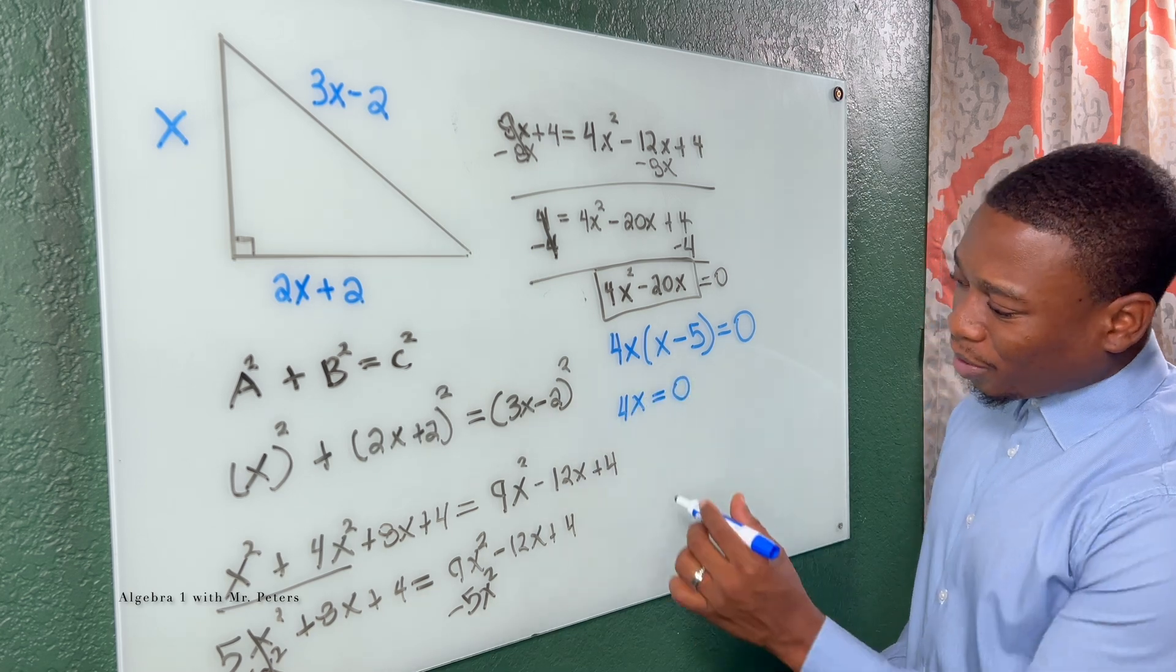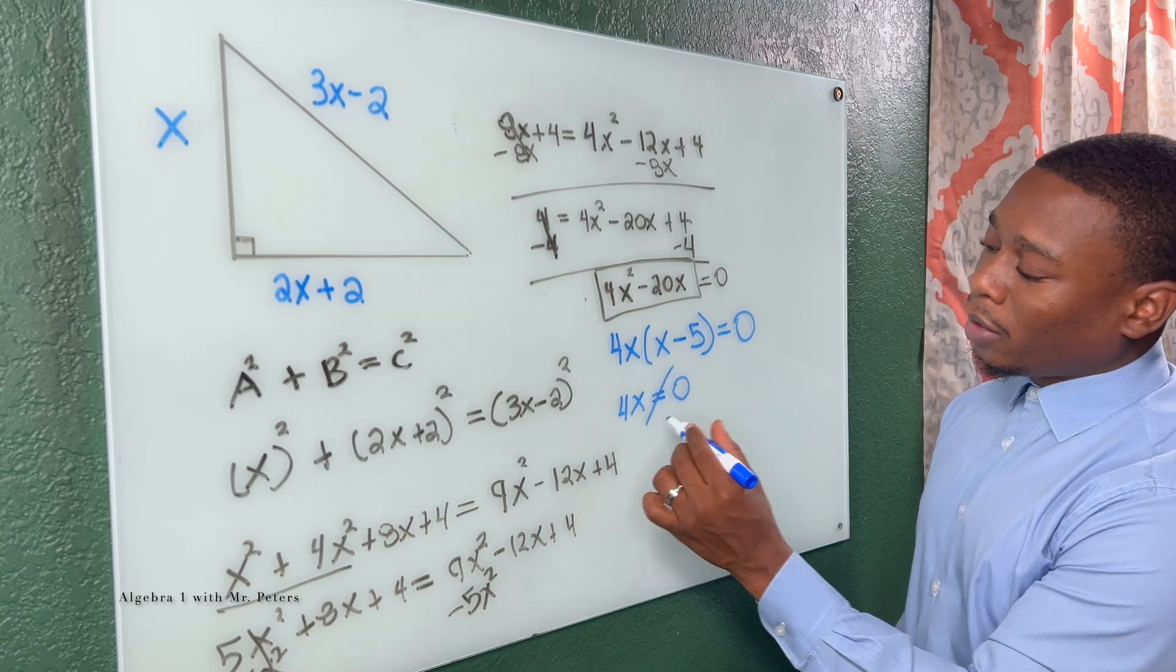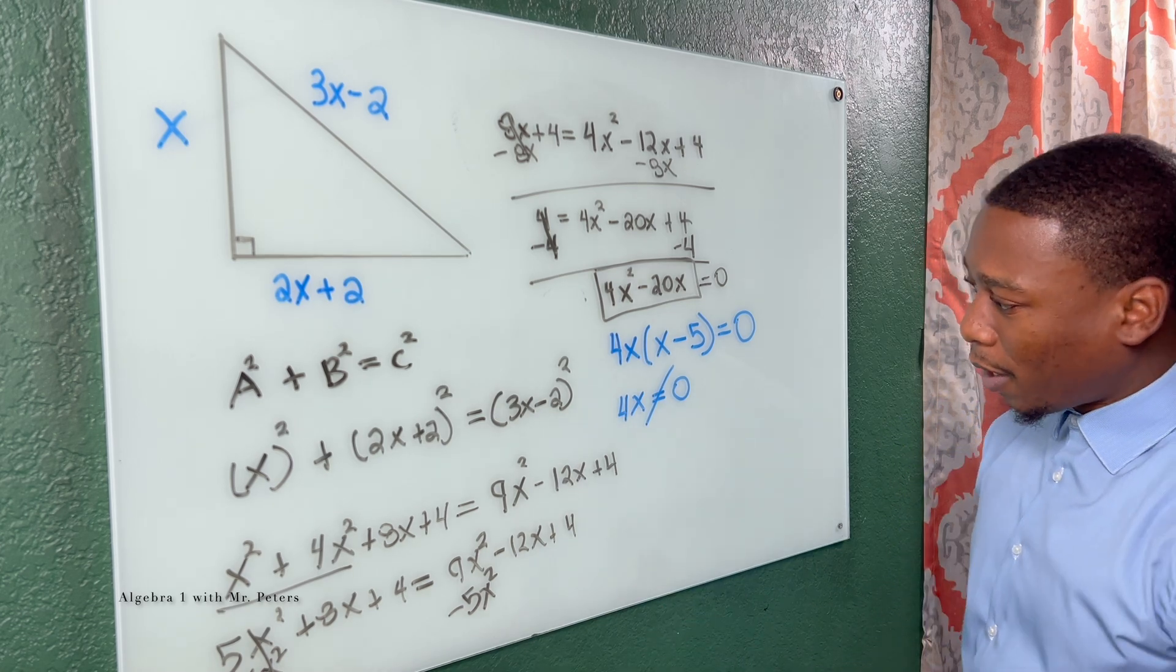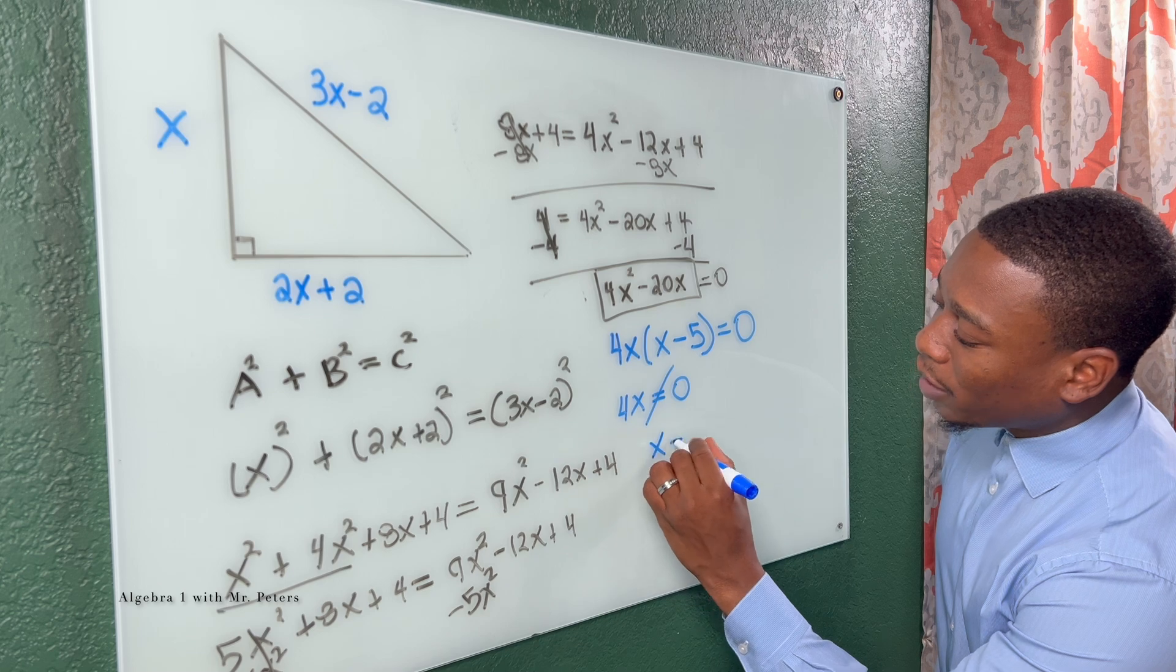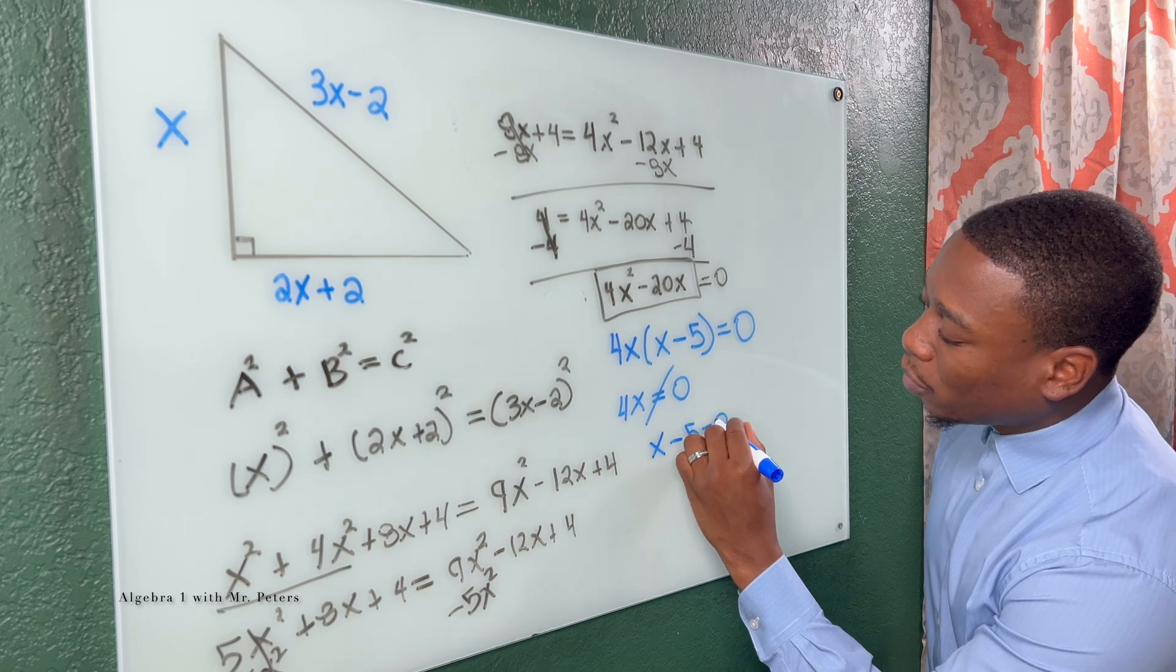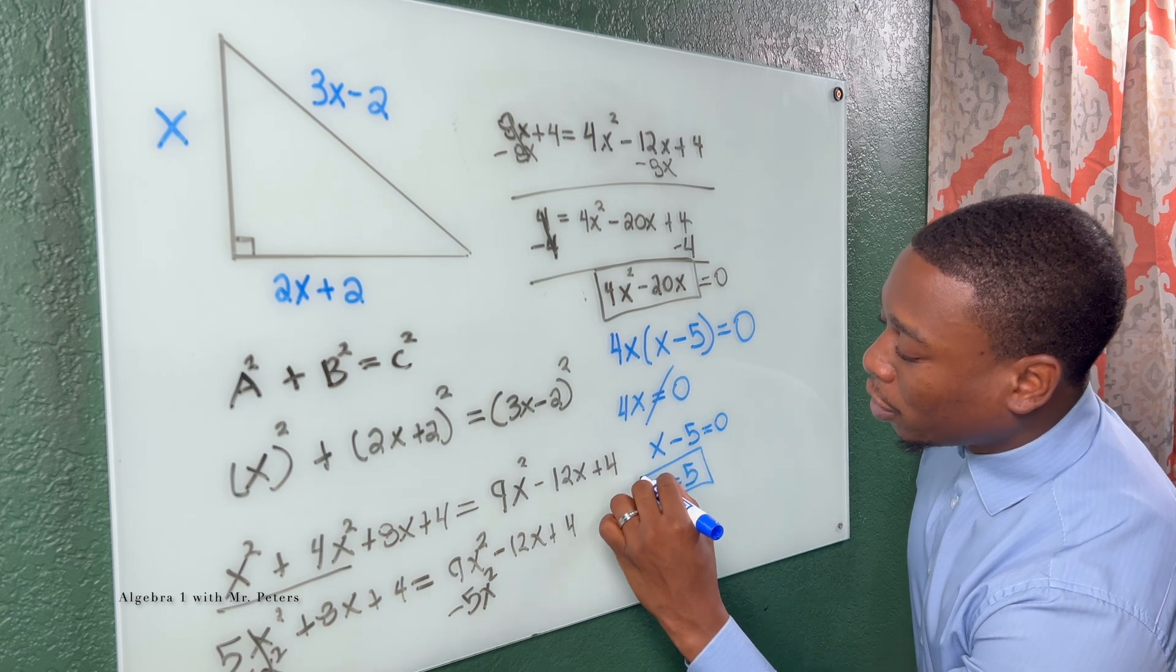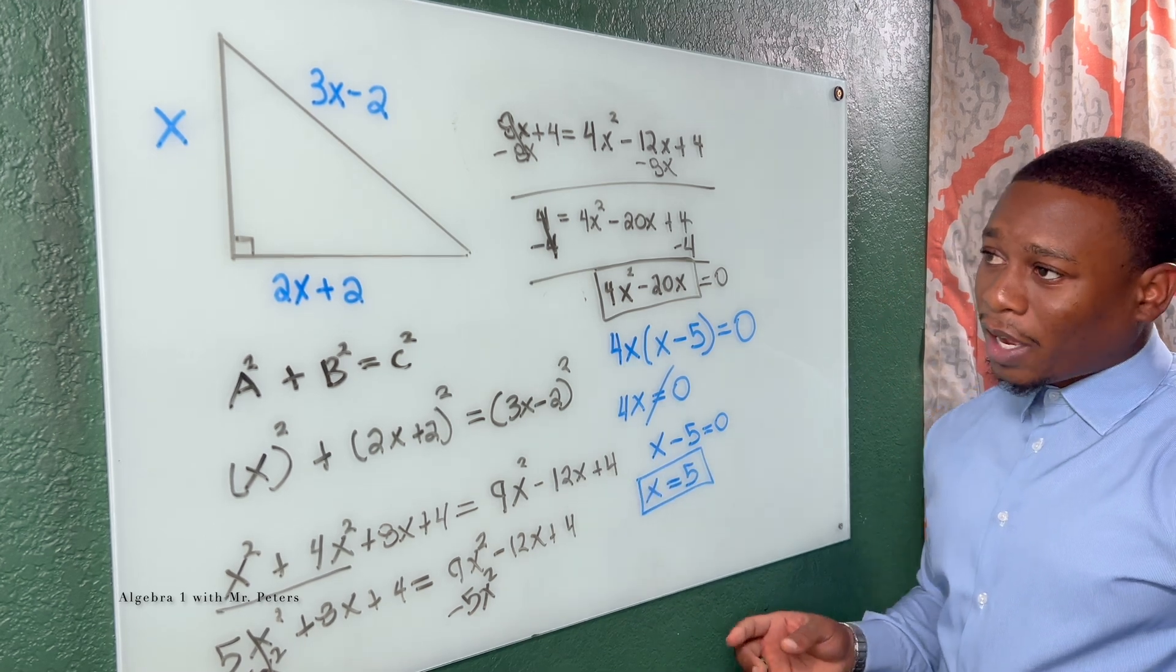4X is equal to 0. We know that this is not going to be a correct answer. X cannot be 0 in this instance. And when we do X minus 5 is equal to 0, we know X is equal to 5. So now we know that X is equal to 5, we need to plug this back in.